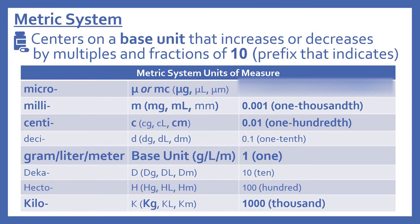Moving up the chart, first we see the prefix deci — so a decigram would be one-tenth of a gram. Then a centigram would be one-hundredth of a gram. A milligram would be one-thousandth of a gram, and a microgram would be one-ten-thousandth of a gram. Coming back to the base unit and going the other way, first we have decagram — 10 grams equals one decagram. Hectogram — 100 grams equals one hectogram. And kilogram — 1,000 grams equals one kilogram.